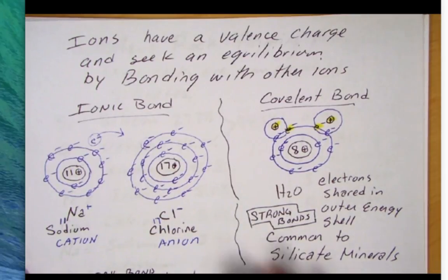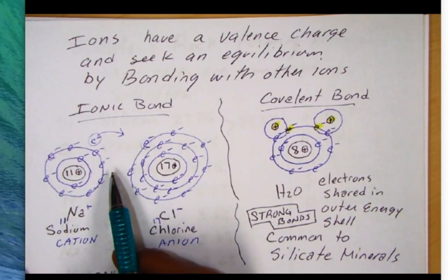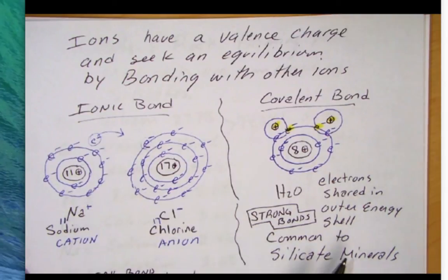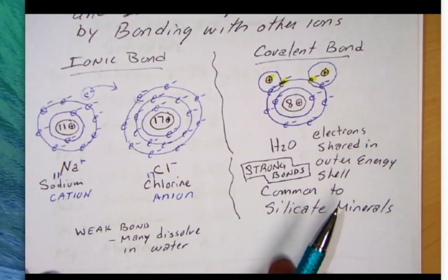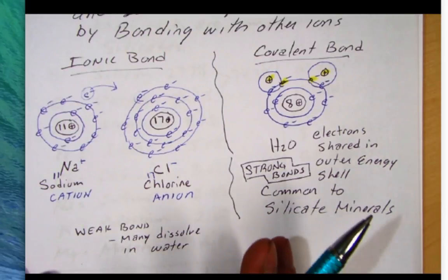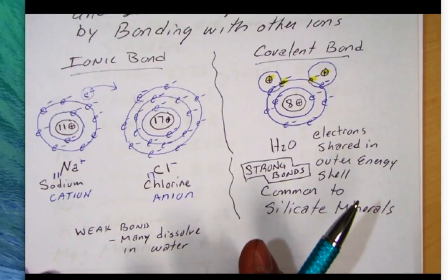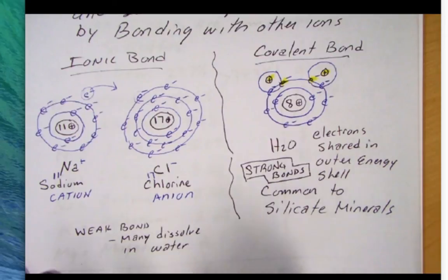Now this type of bond, where it's more of an electrostatic attraction between atoms, is called an ionic bond. And it's a relatively weak bond. If you put sodium and chloride in water, it's going to dissolve over time. So many ionically bonded compounds are weak and dissolve in water.